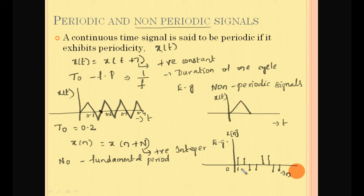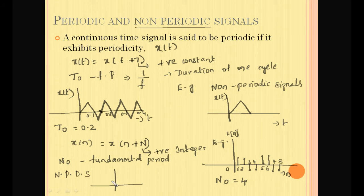With samples at 0, 1, 2, 3, 4, 5, 6 and so on, after the fourth sample the signal is repeating, so its period N₀ = 4. In case of a non-periodic discrete time signal, two non-zero samples do not satisfy the periodic condition, so it is an aperiodic signal. Note that for continuous time signals T can take any positive value, whereas for discrete time signals N is only a positive integer.